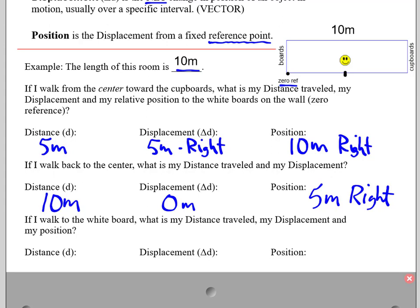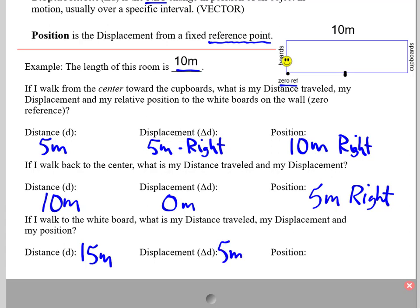If I continue walking toward the whiteboards, what is my distance traveled, my displacement, and my position? If I take my smiley face here, and I walk all the way to the boards, my distance traveled would be 15 meters. Again, you'll notice there's no direction on that. My displacement is 5 meters to the left, and my position is now 0 meters, because I'm at my zero reference.